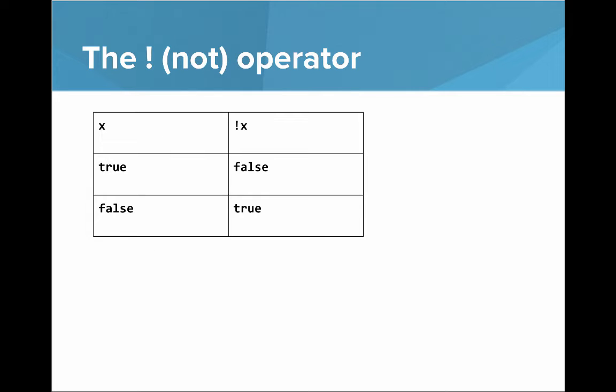Let's look at the NOT operator. What the NOT operator does is give you the opposite of whatever the Boolean expression is. If X is true, then NOT X is false. If X is false, then NOT X is true.